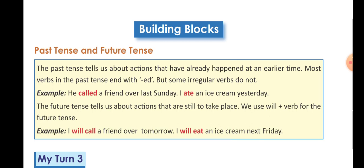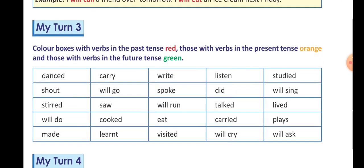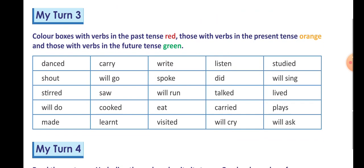In this way, you will complete your My Turn 1 and 2, and try to do My Turn 3 yourself. In My Turn 3, color boxes with verbs in the past tense red, those with verbs in the present tense orange, and those with verbs in the future tense green. Try to do My Turn 3 yourself. Thank you and have a nice day.